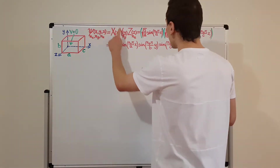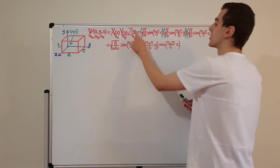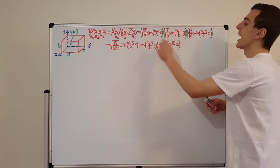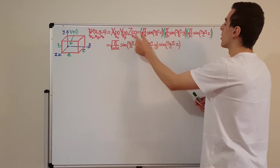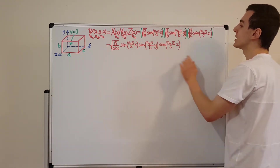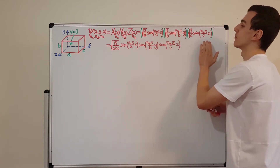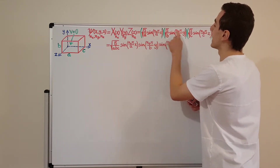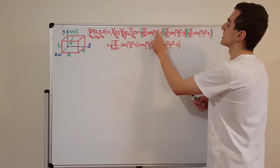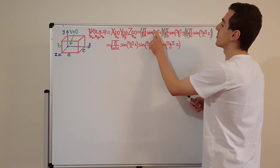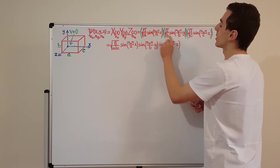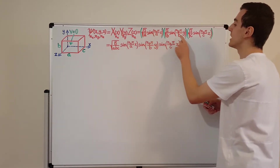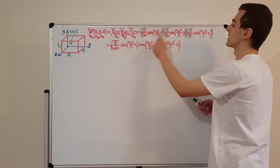X was associated with this function, Y was associated with this function, and Z was associated with this function. You can see that they all have the same form. The only difference is nx, ny, and nz have a different subscript. There's a specific integer for each of the coordinates, and the lengths a, b, and c are different for each.